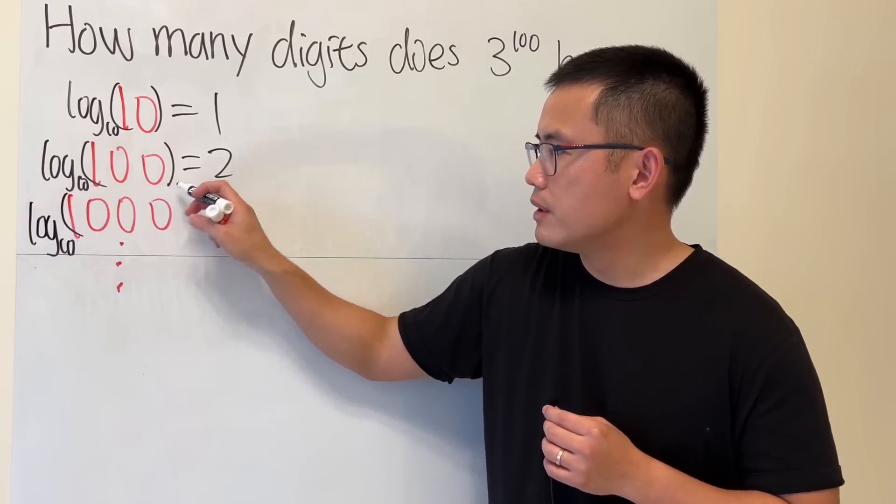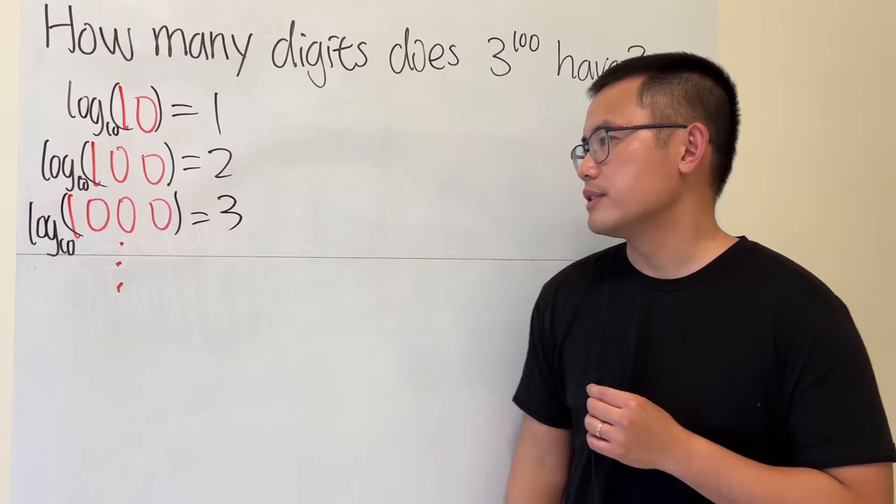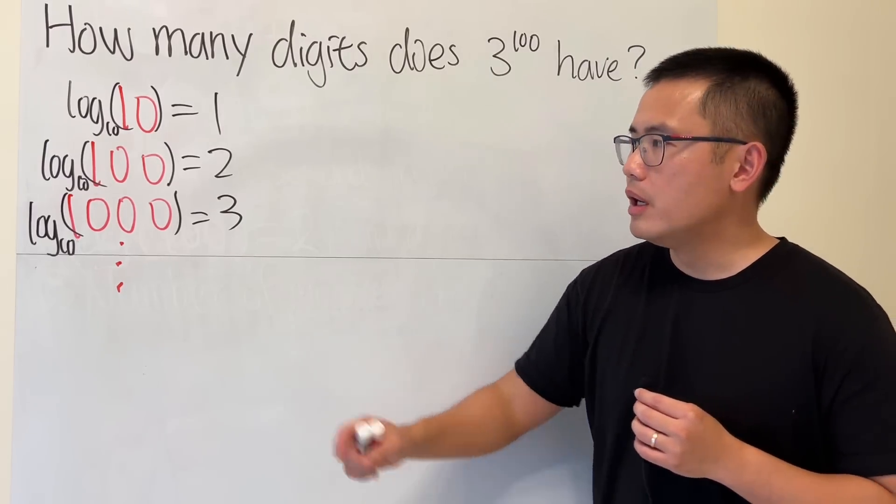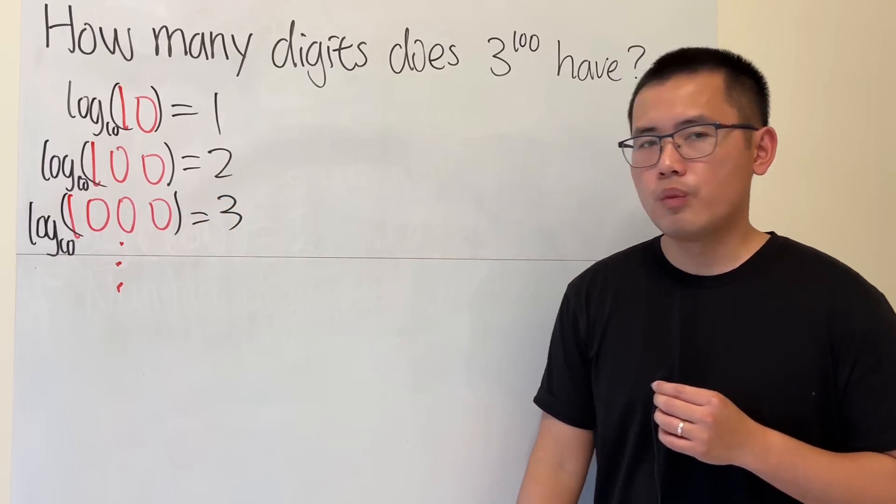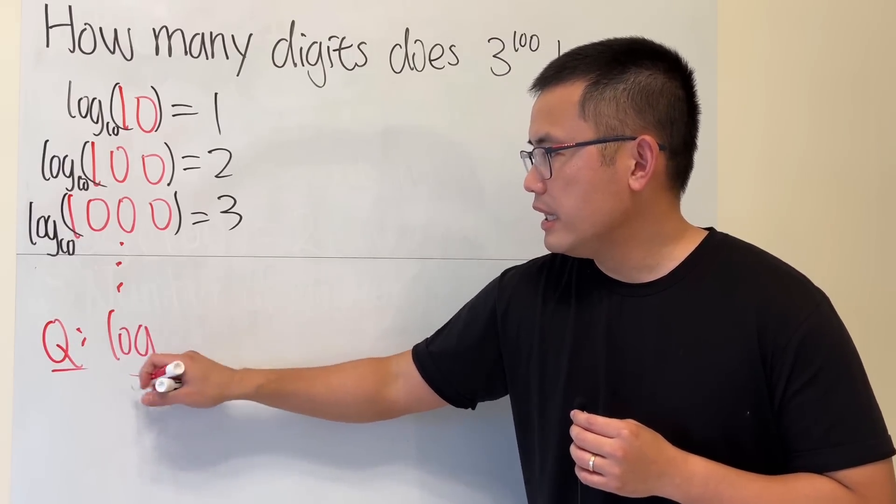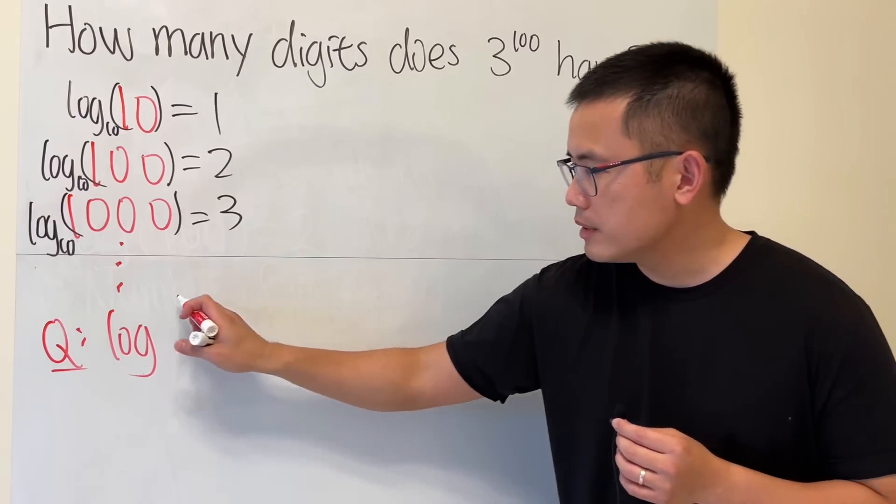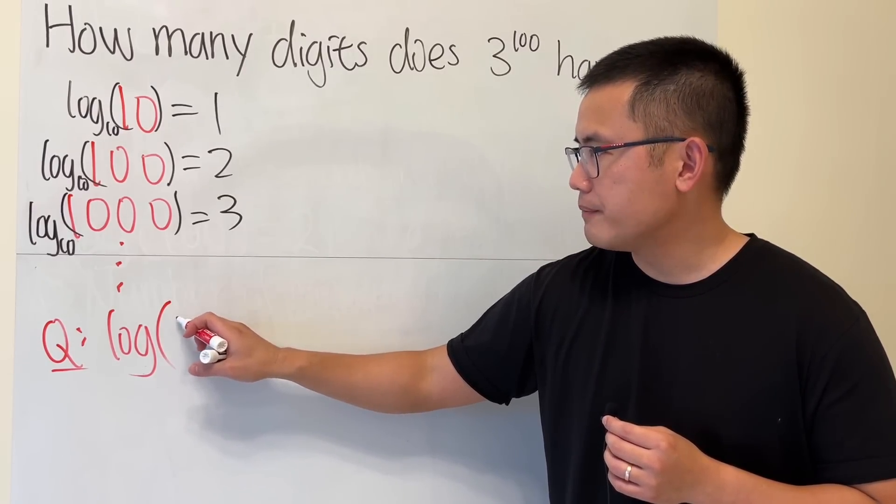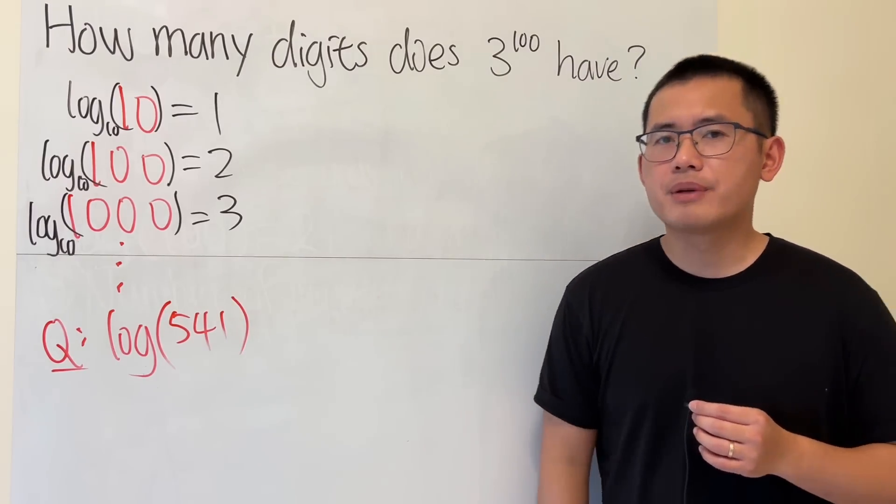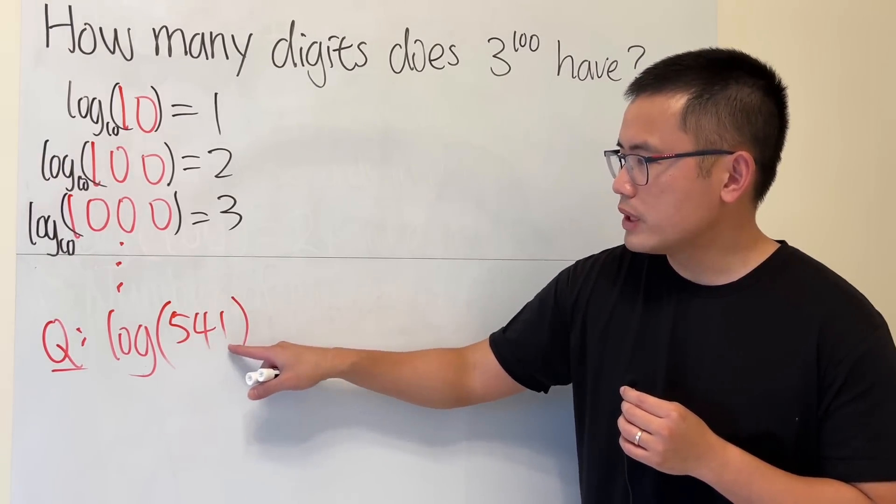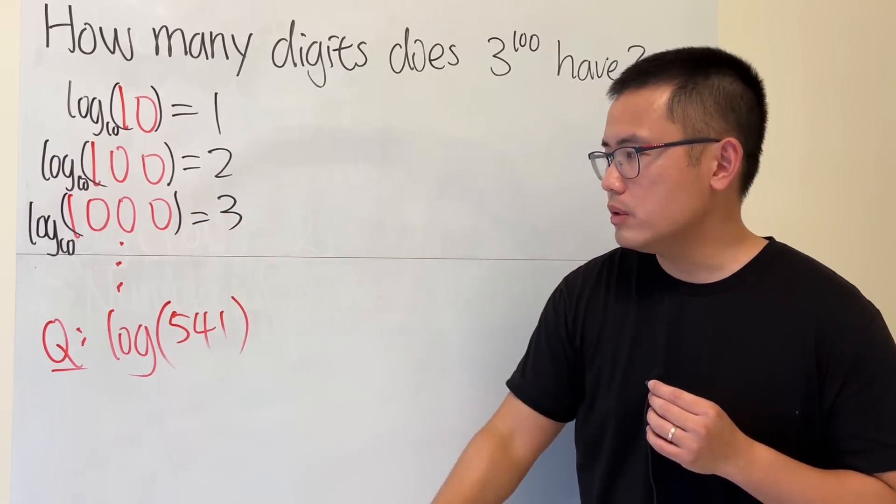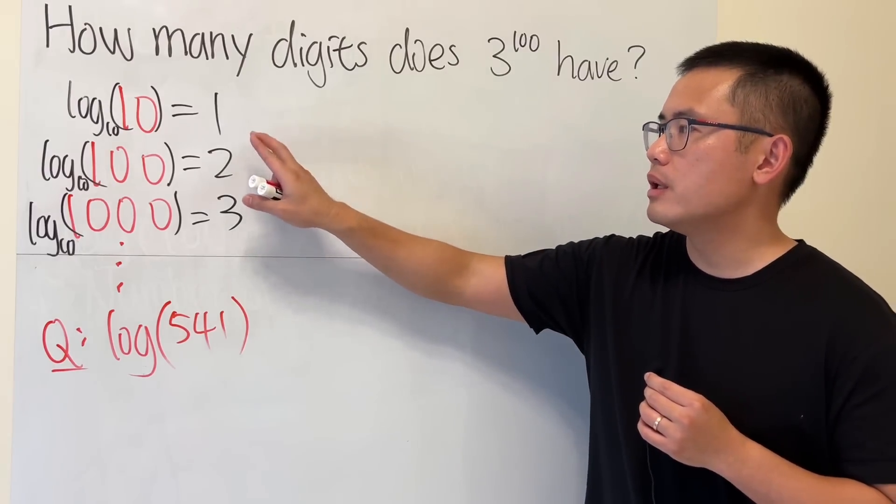Likewise, if you take log of 1000, we get 3, and so on. Now check this out: what if I take log base 10 of a number in between 100 and 1000? Let's say we have 541. How big is this number? Well, we know 541 is between this and that, and log is an increasing function, so the result must be between 2 and 3.